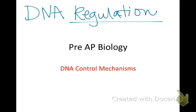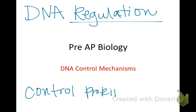How does DNA control protein synthesis? Your cells know to make certain proteins at certain times — you're not making antibodies all the time unless you're sick, you're not making insulin all the time unless you have high blood sugar. So your cells have to start making proteins and then stop making proteins.